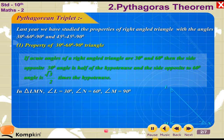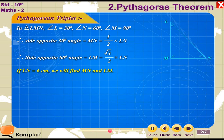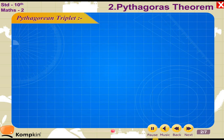In triangle LMN, angle L is equal to 30°, angle N is equal to 60°, angle M is equal to 90°. Therefore, side opposite to 30° angle: MN = (1/2) × LN. Side opposite to 60° angle: LM = (√3/2) × LN. If LN is 6 cm, then MN = (1/2) × 6 = 3 cm, and LM = (√3/2) × 6 = 3√3 cm.